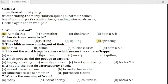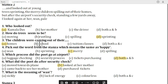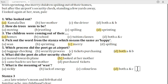Question four: pick out the word from the stanza which means 'happy.' The answer is C — merry. Question five: which process did the poet go through at the airport? The answer is D — both A and B: luggage checking and the security process. Question six: what did the poet do after the security check? The answer is B — looked at her mother. Question seven: what is the meaning of 'wan'? The answer is D — both A and C: sickly and lack of energy.